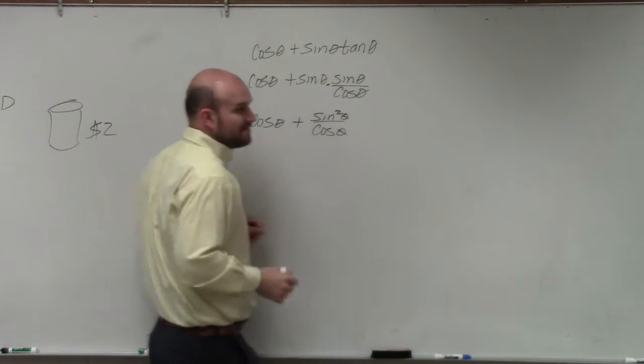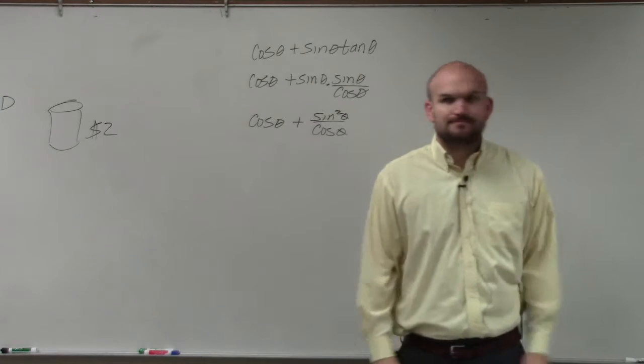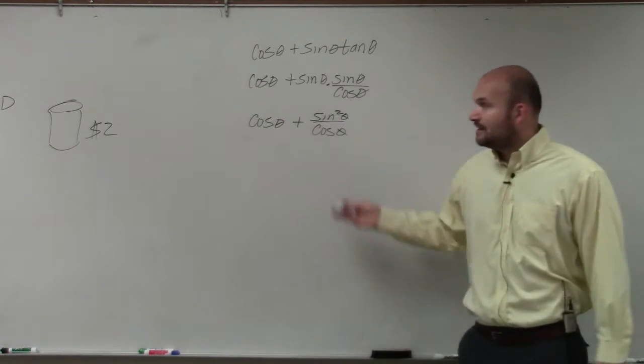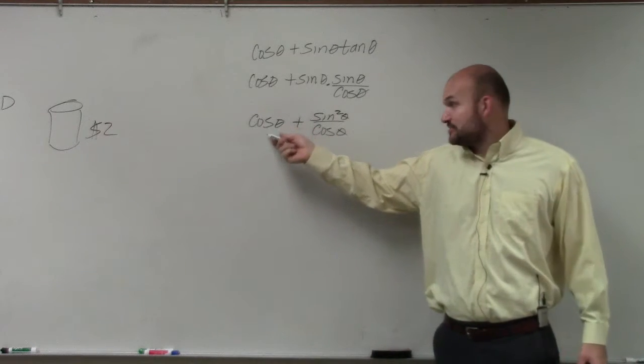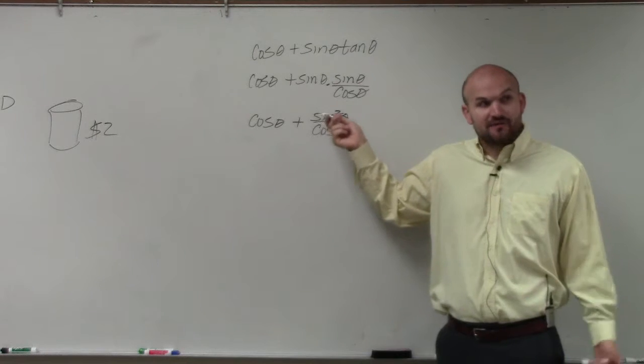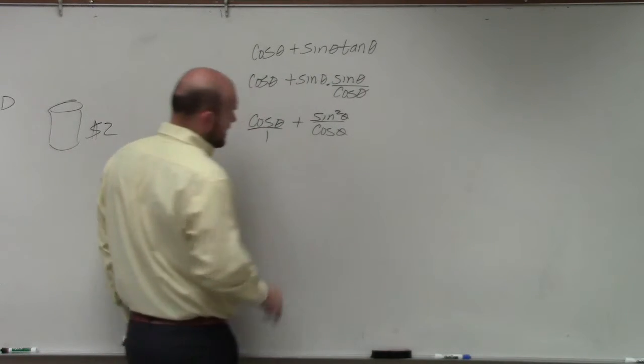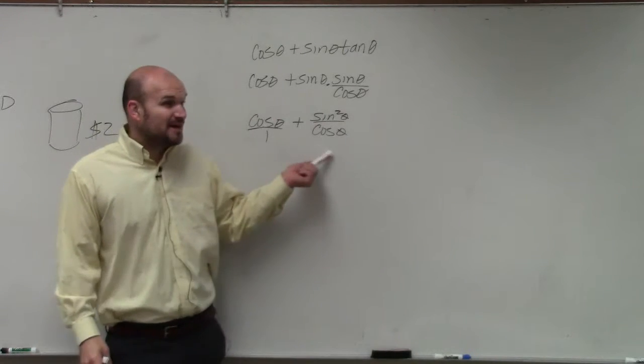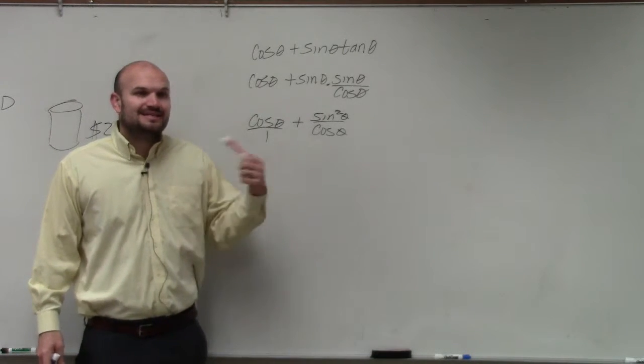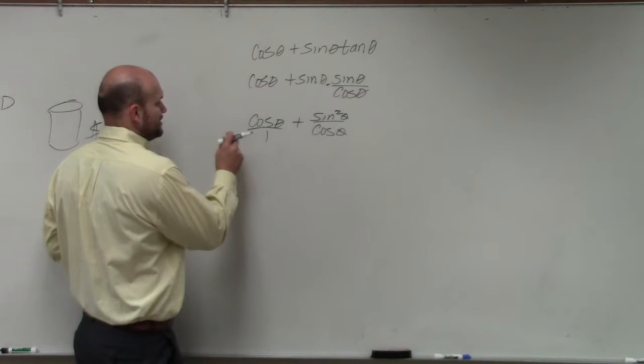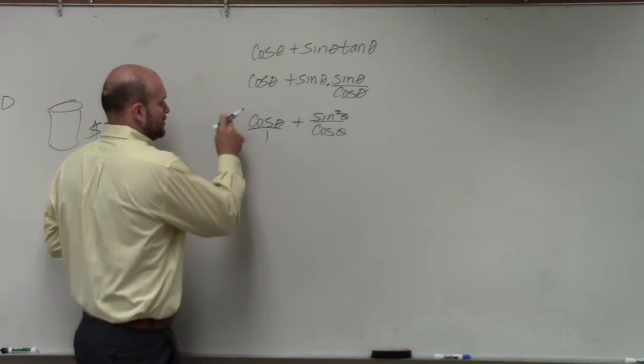So now I have a fraction times a whole number. So now I've got to figure out how do I add this expression plus this expression as a fraction. Well, we want to rewrite them both as fractions, and then I realize to add fractions I have to have common denominators. So I have to multiply by cosine of theta over cosine of theta.